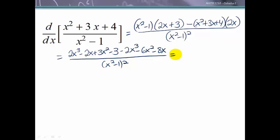So combining like terms actually it looks like my x cubed terms cancel and I have negative 3x squared. Combining my x terms I have minus 10x and then minus 3 and this is all over x squared minus 1 squared.